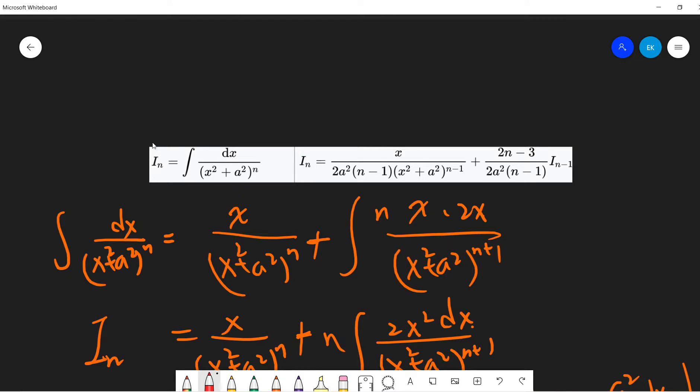So now I define this I_n to be dx divided by x squared plus a squared to power n. And we try to prove this I_n has this property, basically the reduction formula relating I_n to I_n minus 1, okay?